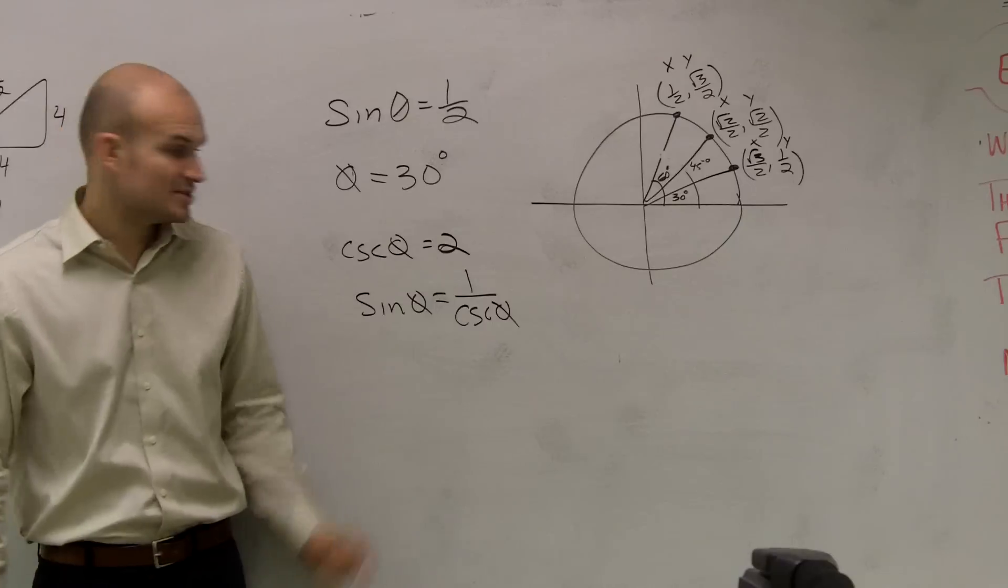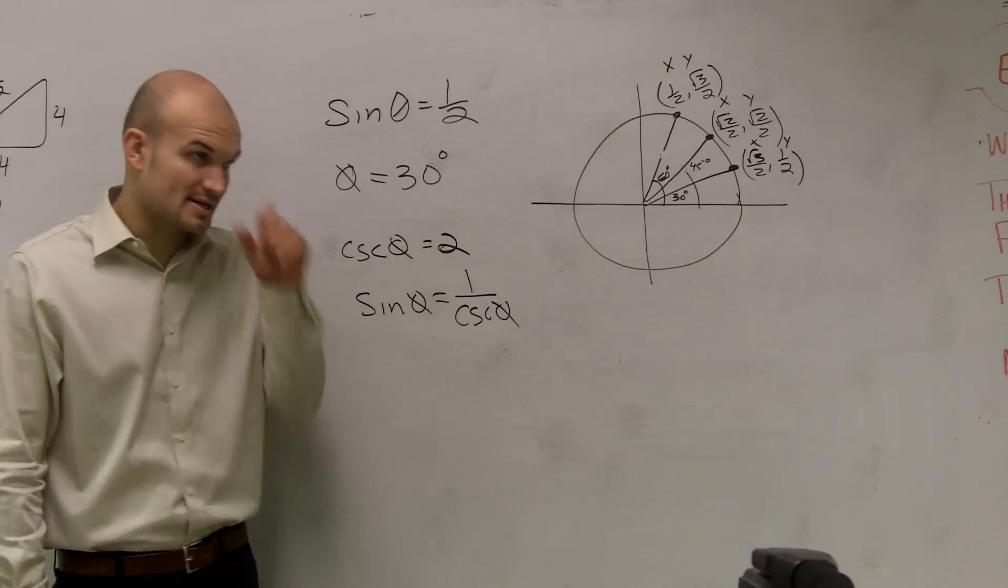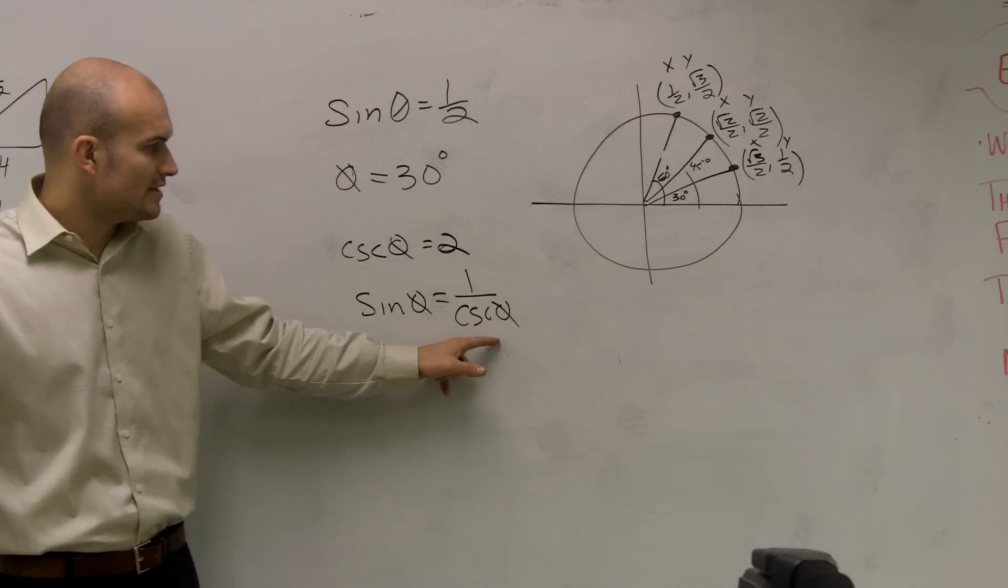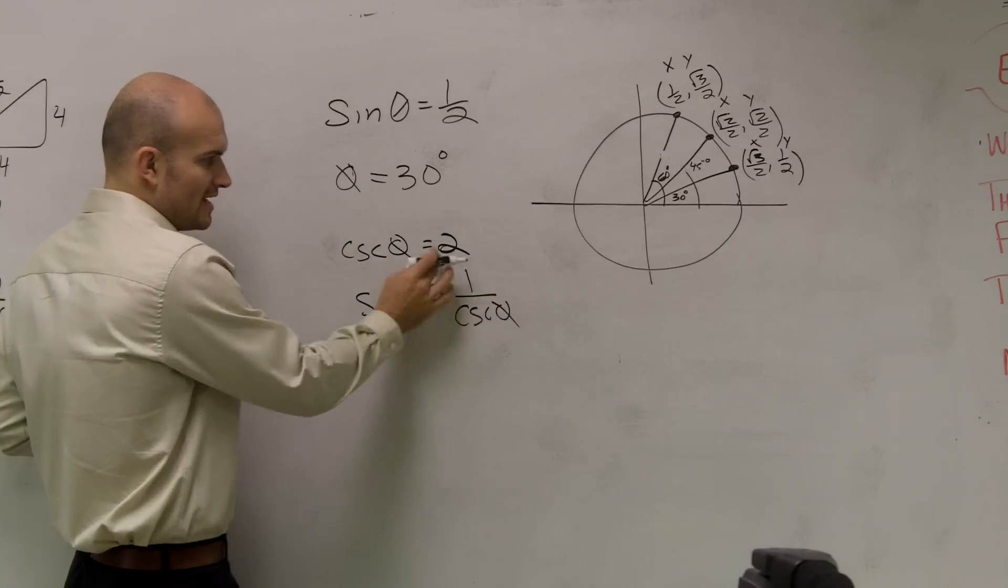You have to know the relationship between sine and cosine, or cosecant. So, if sine of theta is 1 over cosecant of theta, then you could say that, well, since cosecant of theta is equal to 2...